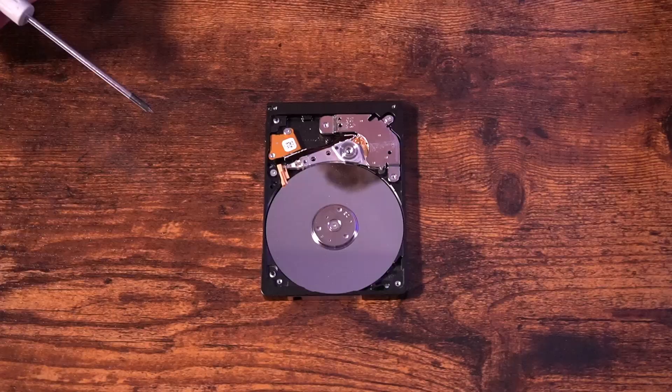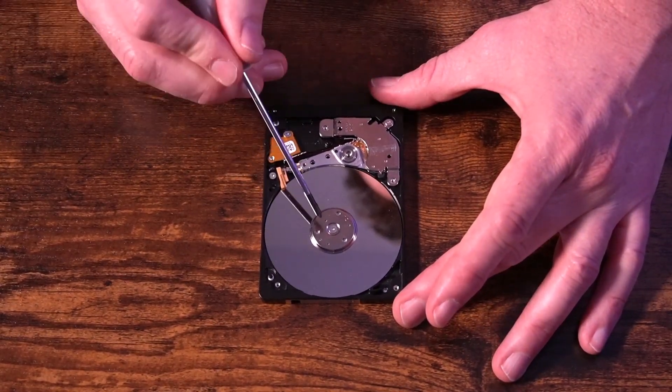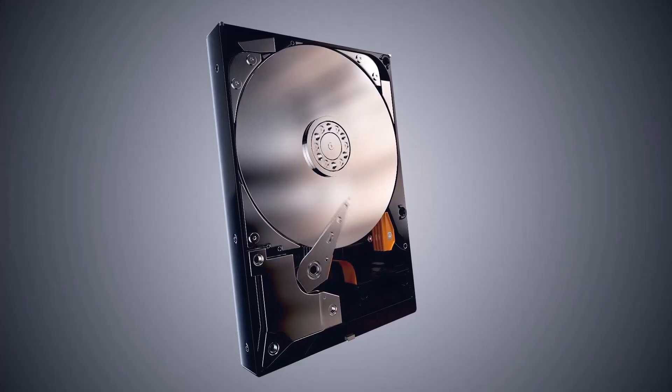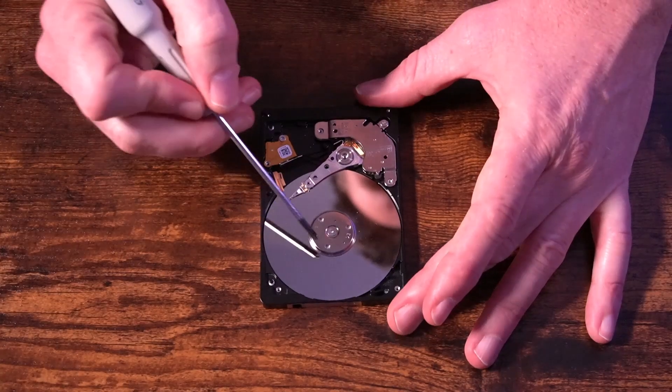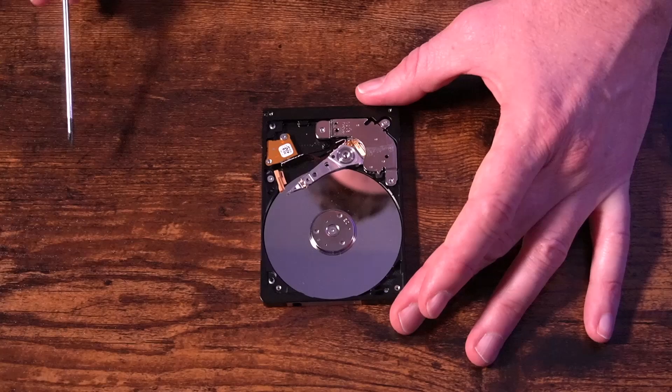When it comes to hard disk drives another thing that we need to be aware of is that this has a certain speed to it. That is I can spin this, there's a motor that spins this around and then this arm comes out and reads this and so the faster that this spins the faster that we can actually read that data.